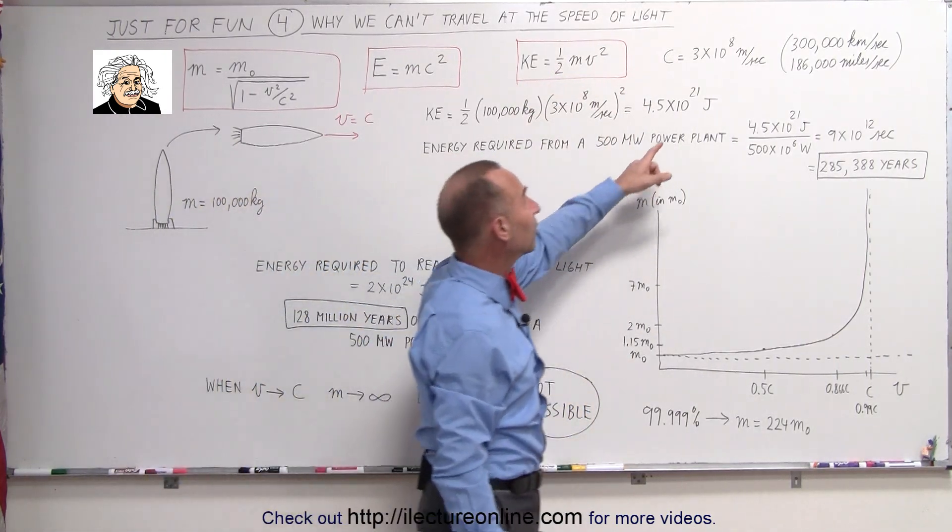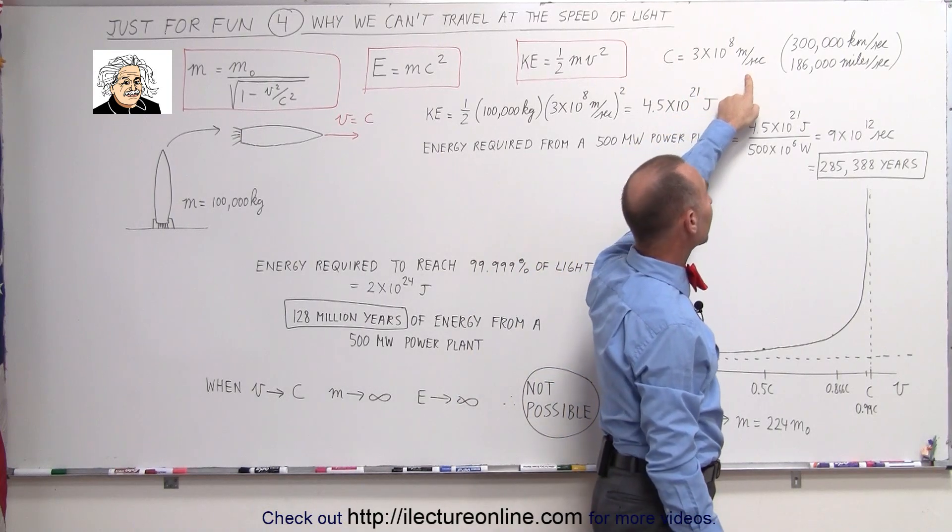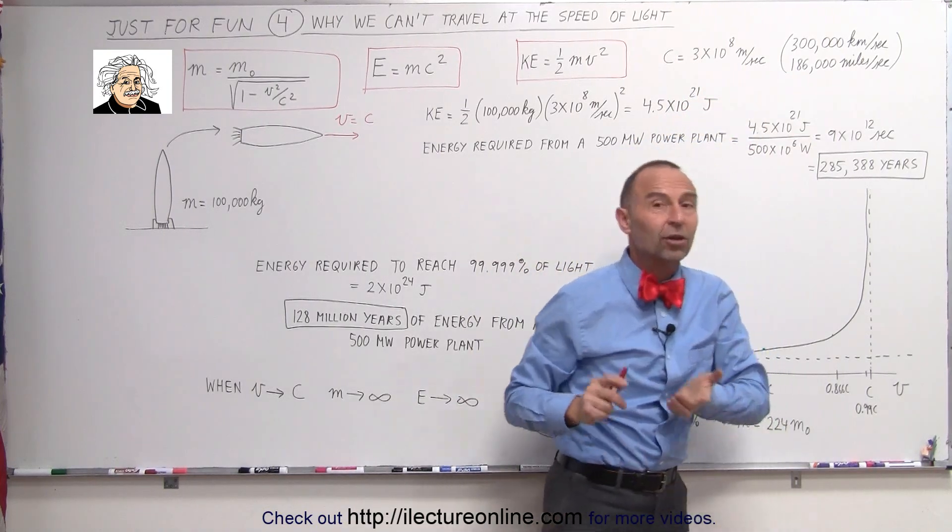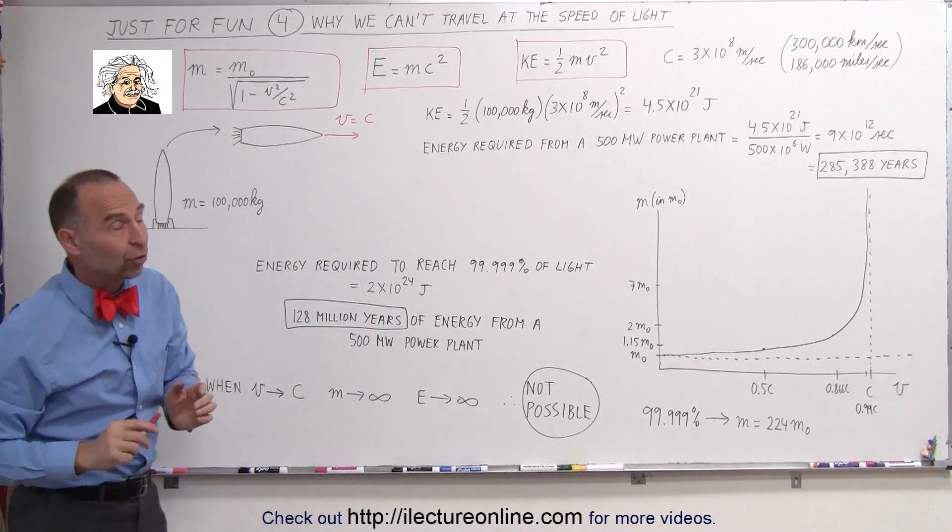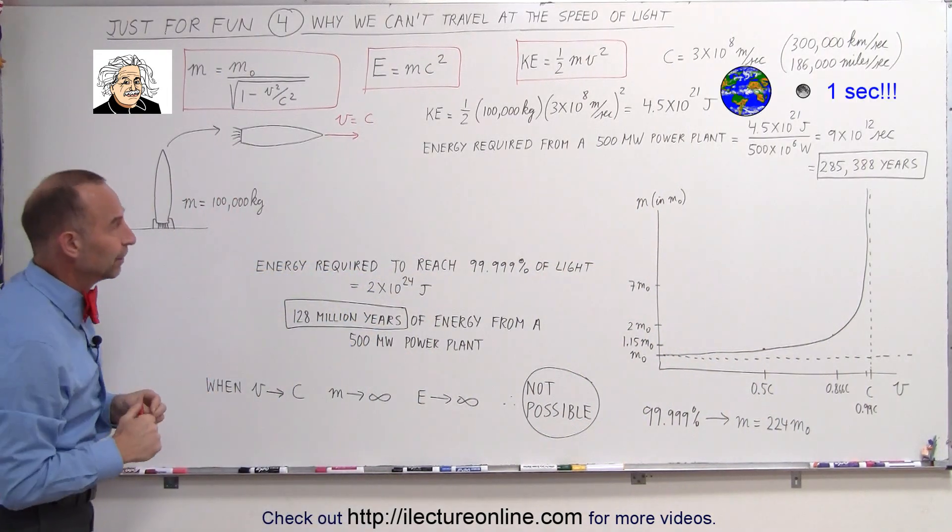By the way, the speed of light is 3 times 10 to the 8 meters per second, which equates to 300,000 kilometers per second and 186,000 miles per second, which is quite fast. That's from here to the moon in just over a second.